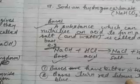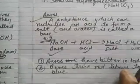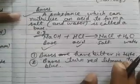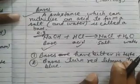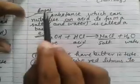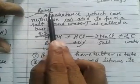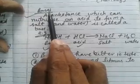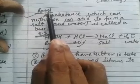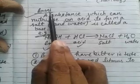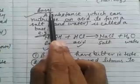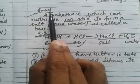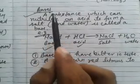In another way, we can also define bases briefly: bases are the chemical opposites of acids, because they show just the opposite behavior of acids.